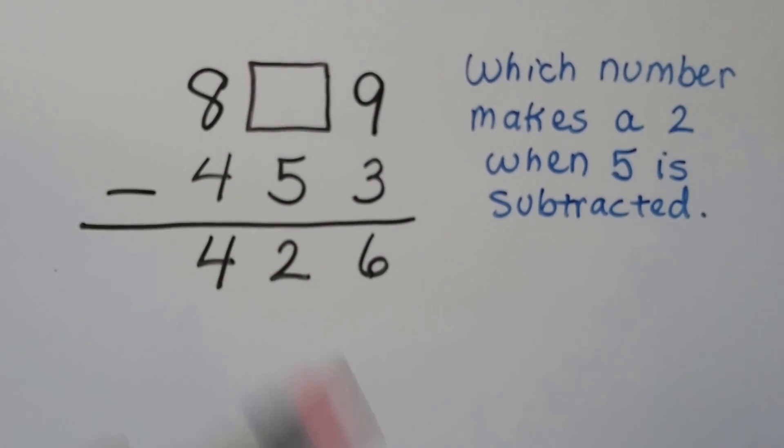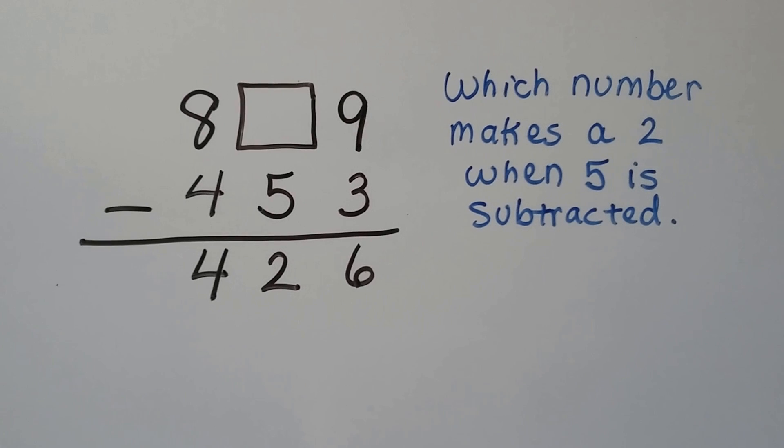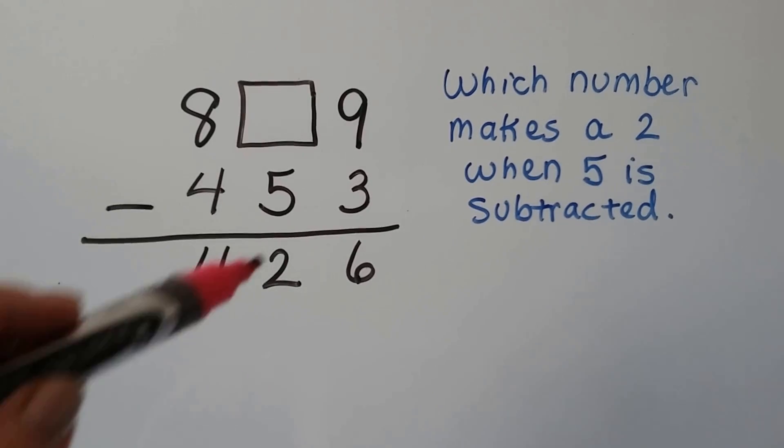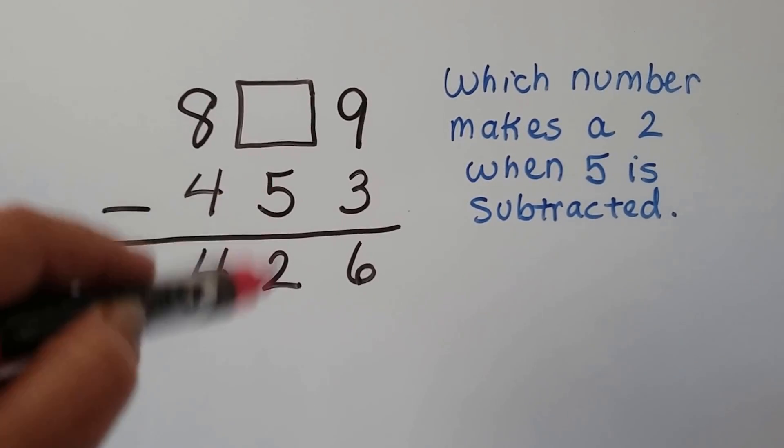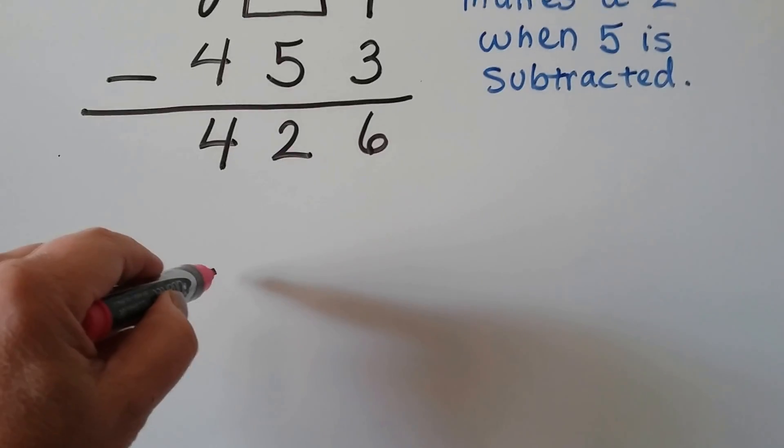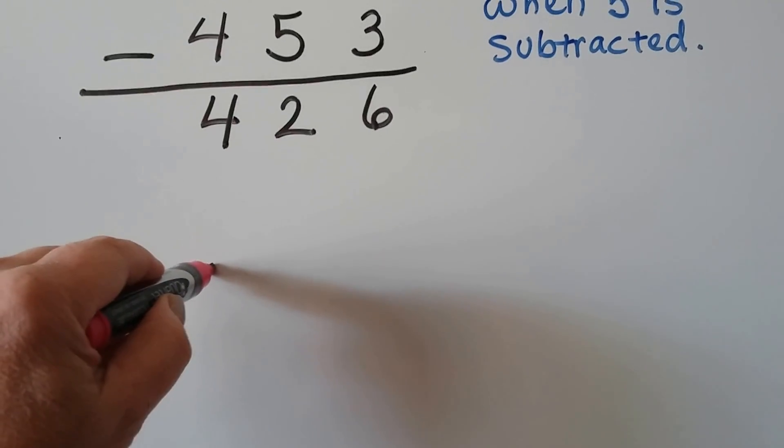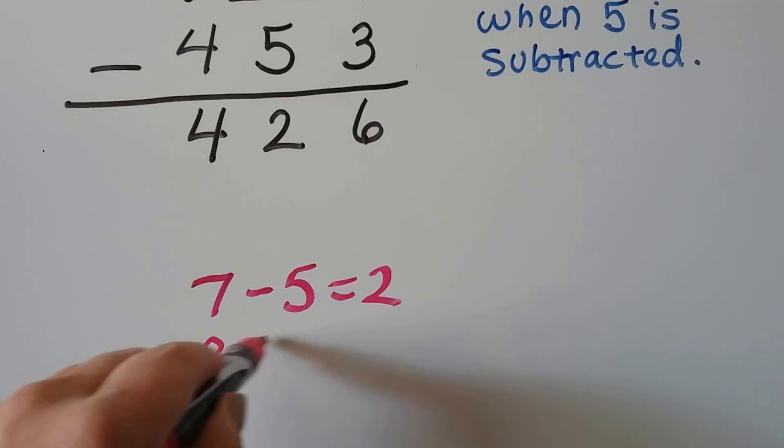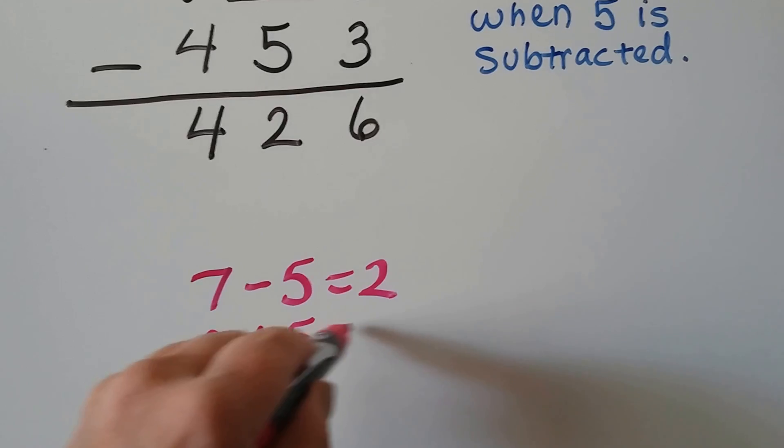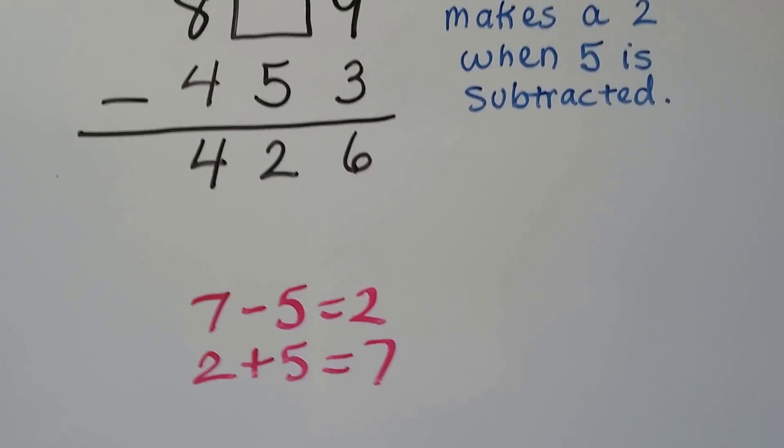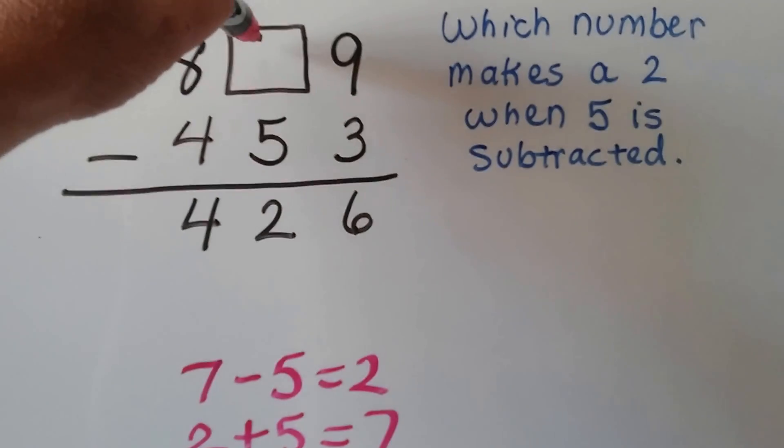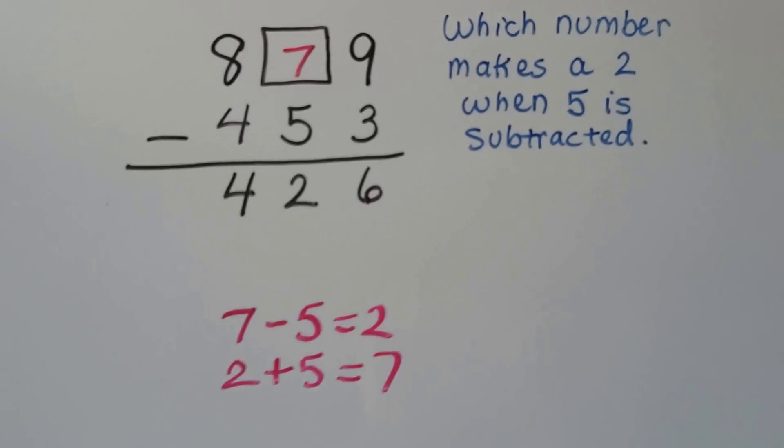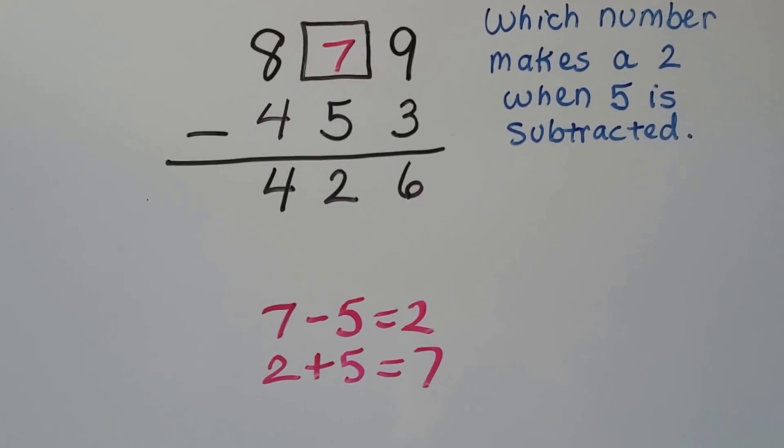But something take away 5 is a 2. So what number makes a 2 when you take 5 from it? When 5 is subtracted? Well, we can actually add these two together and get a 7 because it's the opposite. 7 minus 5 equals 2 and 2 plus 5 equals 7. It's a fact family. So we can rely on fact families. So we know a 7 must go in here. And 8 take away 4 is 4. So that works. So think about fact families as you do this.